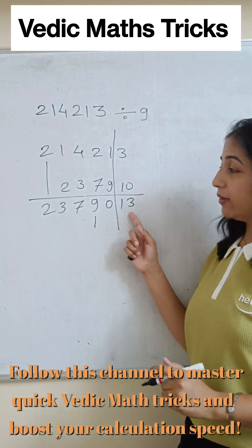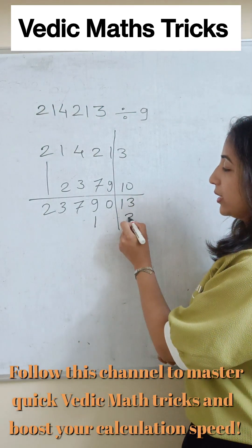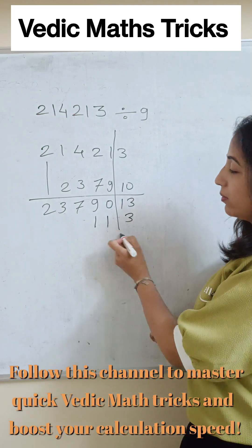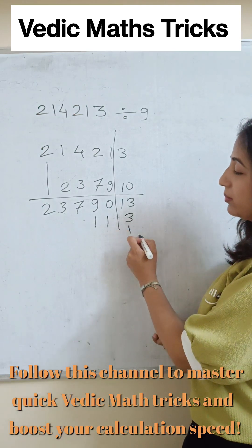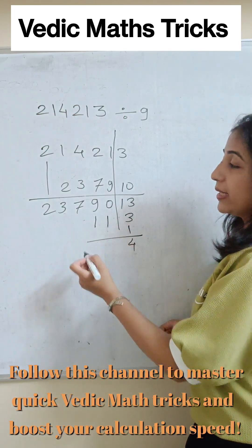13 we again divide by 9 — so here I will take 1, and 1 plus this 3 becomes 4.